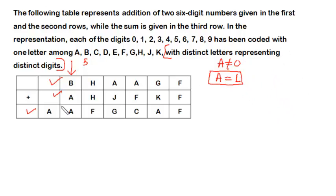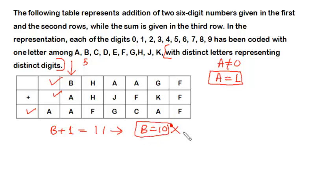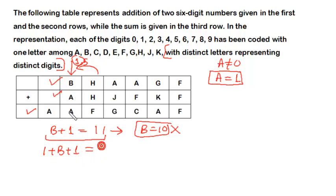Now let us focus on B. B plus A equals A with a carry forward, and since A is one, this means B plus one gives eleven. Considering this equation alone, B would equal ten, which is impossible since B is a single-digit number. So there must have been a carry forward from the column where H plus H is computed. That carry of one means: one plus B plus one equals eleven.